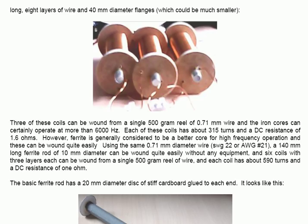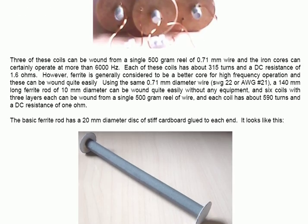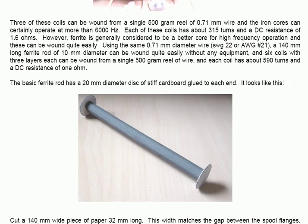However, ferrite is generally considered to be a better core for high frequency operation. And, these can be wound quite easily. Using the same 0.71 mm diameter wire, and a 140 mm long ferrite rod of 10 mm diameter, can be wound quite easily without any equipment. And, six coils, with three layers each, can be wound from a single 500 gram reel of wire. And, each coil has about 590 turns. The resistance is about 1 ohm when you do that.